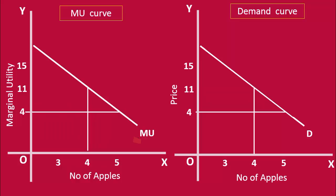When the price falls, the consumer buys more to reduce his marginal utility in order to be in equilibrium. Hence the consumer buys more at a lower price.